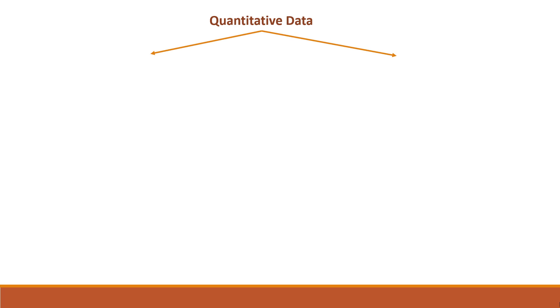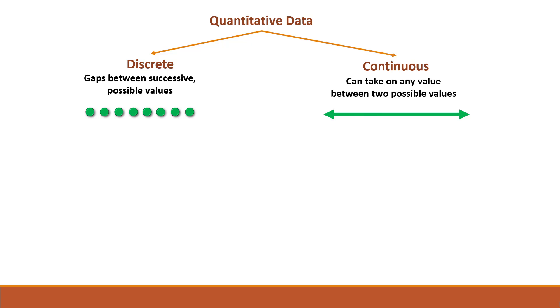Now let's go back to quantitative data and learn how some quantitative data is discrete and some quantitative data is continuous. What is the difference? Well, discrete quantitative data have gaps between successive possible values. And continuous quantitative data can take on any value between two possible values. As always, it's going to be easier to understand what it means by considering a few examples.